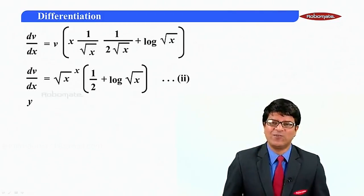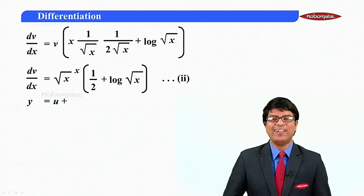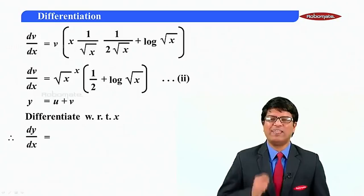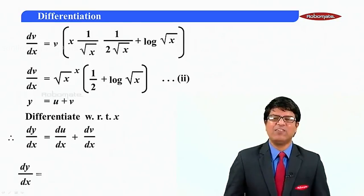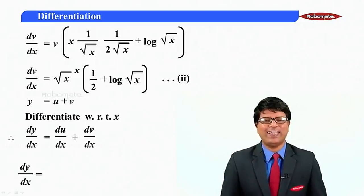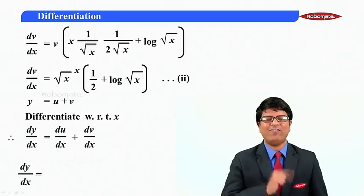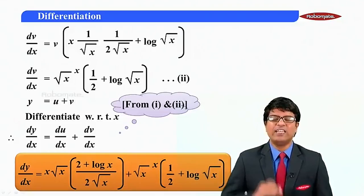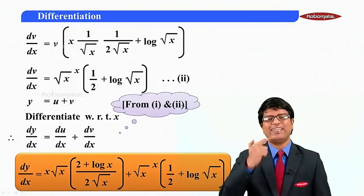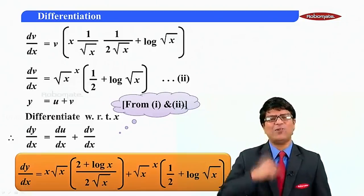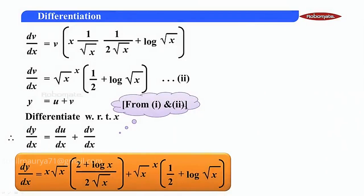Since y is equal to u plus v, differentiating with respect to x gives dy by dx equal to du by dx plus dv by dx. Resubstituting the values from equations one and two: dy by dx equals x raised to root x times the quantity 2 plus log x upon 2 root x, plus root x raised to x times the quantity one half plus log of root x.